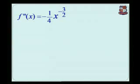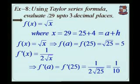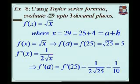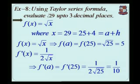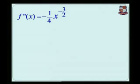Now we find the second derivative. The first derivative is 1 upon 2 root x. Writing 1 by root x as x to the minus half power, so the power of x is minus half. The second derivative is minus 1 by 4 x raise to minus 3 by 2, since 1 by 2 multiplied by minus 1 by 2 gives minus 1 by 4, and x to the power minus 1 by 2 minus 1 gives x to the minus 3 by 2.